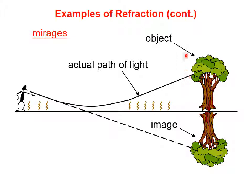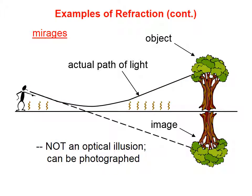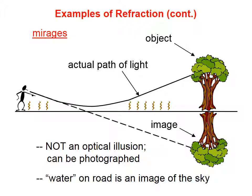In other words, we see the real object and then we see an image of the object because the light from the real object is bending in this way. Mirages, by the way, are not optical illusions — you can photograph them. If you've ever seen water on the road: I remember as a kid driving on the interstate and looking ahead and it looked like the road was wet. Well, that water on the road is an image of the sky.